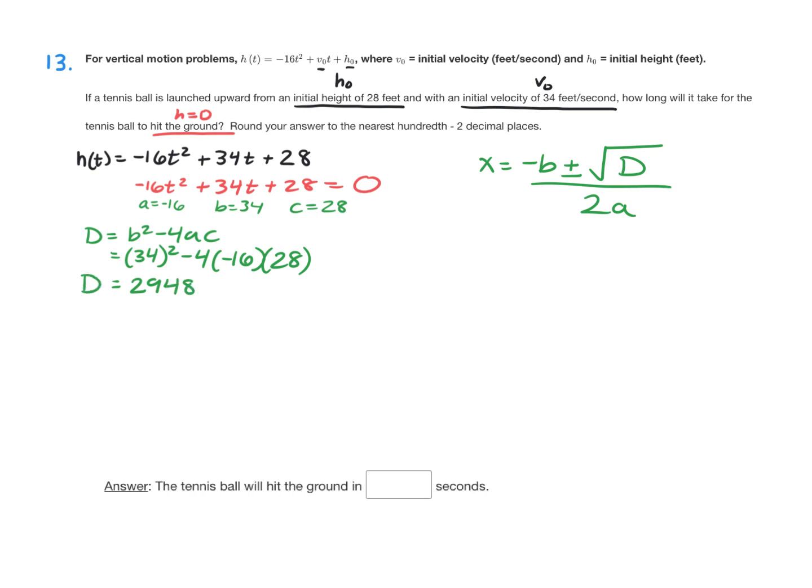And now I can go to my quadratic formula here and go x equals opposite of b. Now b is 34, so opposite of b is negative 34. And then it's plus or minus the square root of the discriminant, which we just calculated, was 2,948. And that's divided by 2 times a, which is 2 times negative 16. So we can do that quick. That's negative 32.